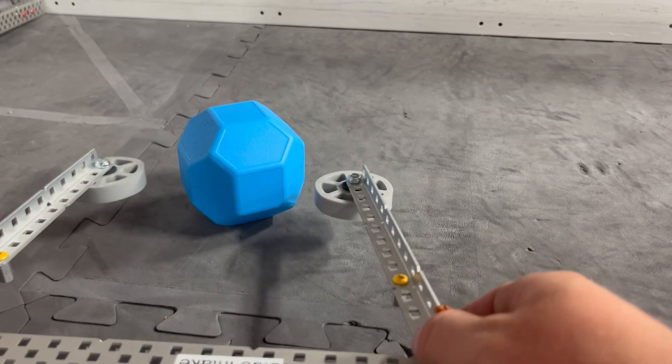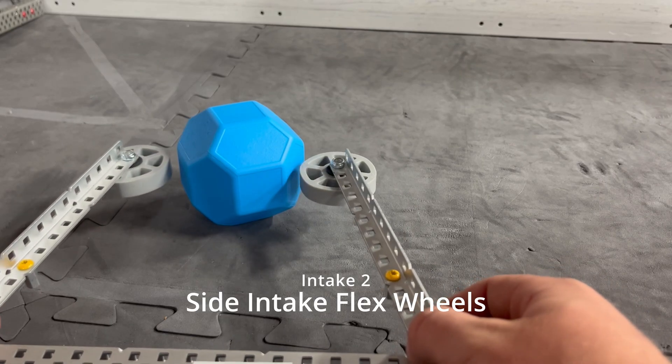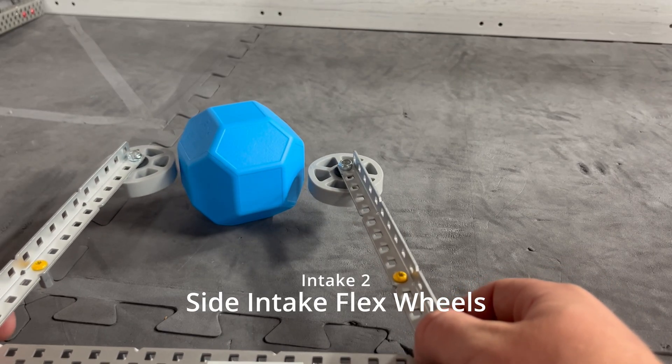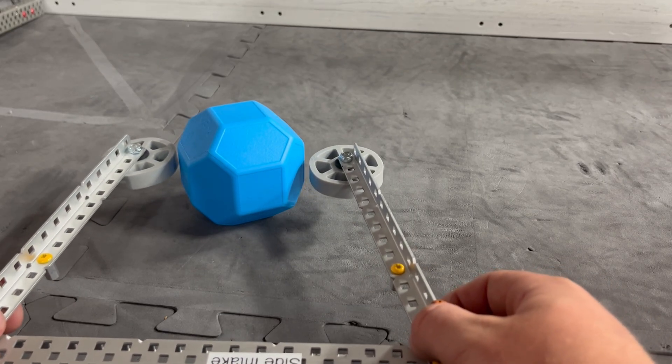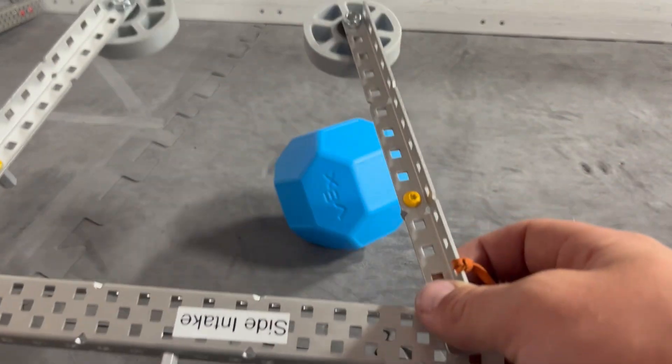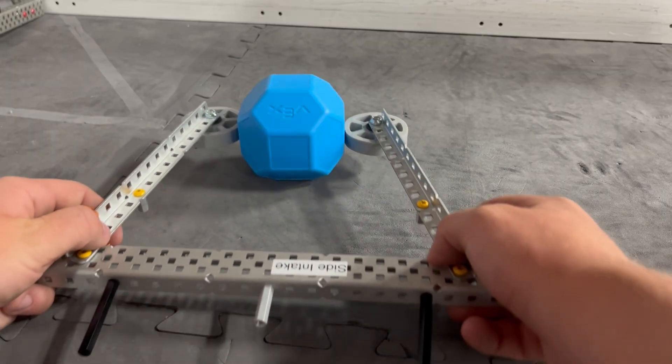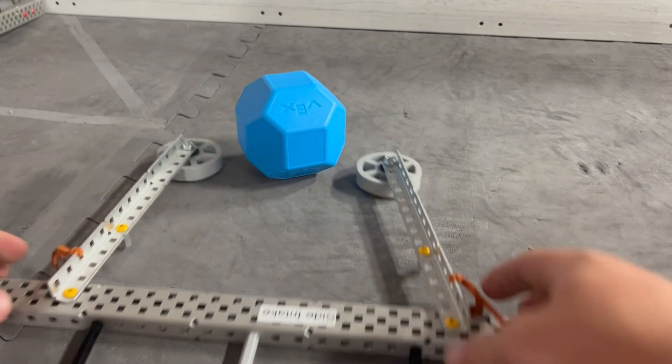The next intake style we're going to talk about is the side intake flex wheels, which is seeming to be a common thing as it's the easiest way to get them out of the match load zones. This is going to be really simple. This is obviously not motor powered, but just driving like this with some compression is able to intake the balls really easily.